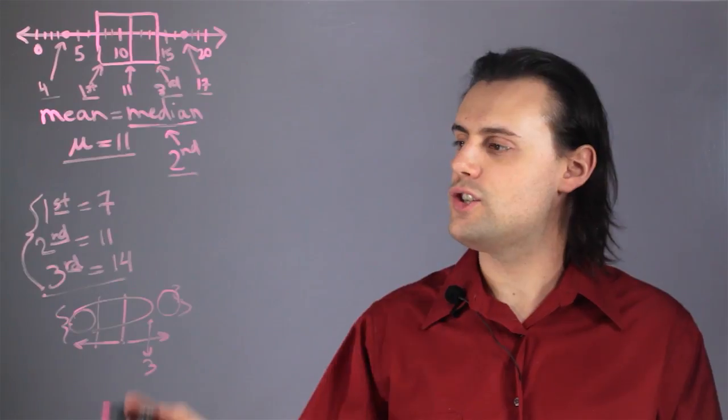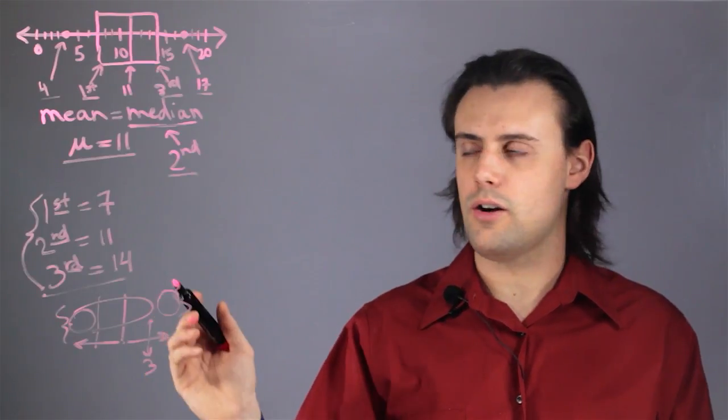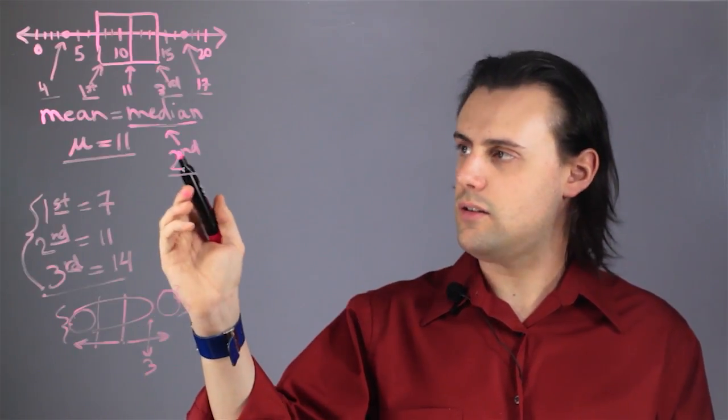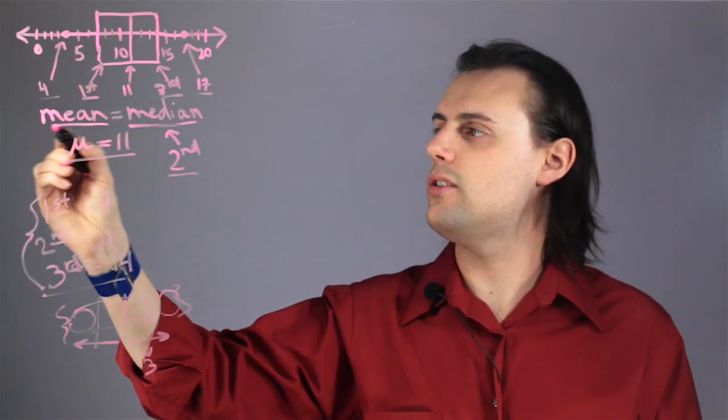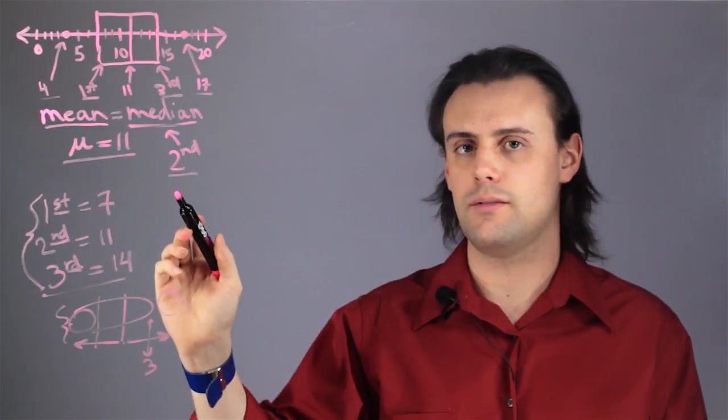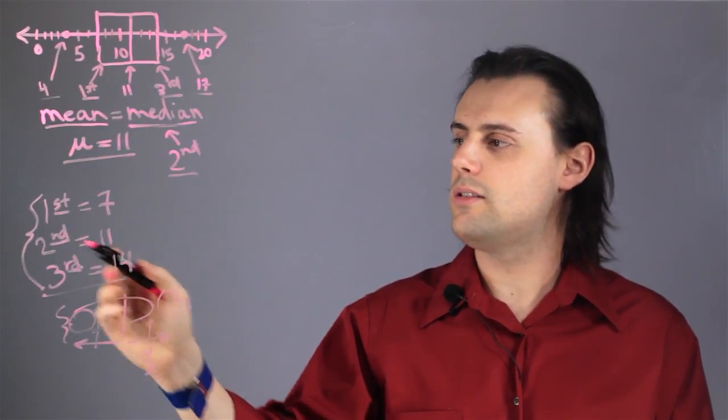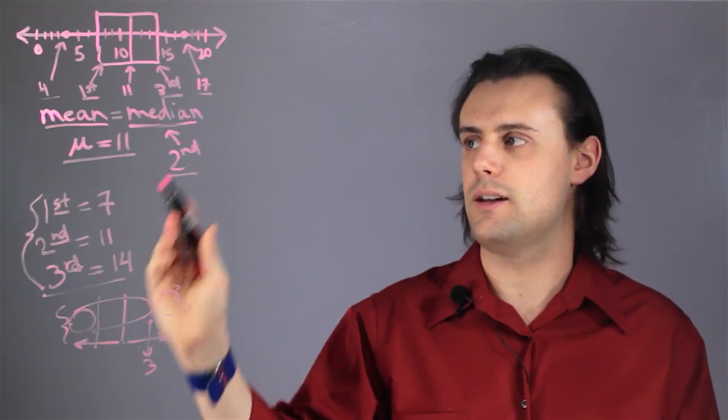So that's all the information I can gather unless I know that it is indeed a normal distribution in which case the mean would be equal to the median, 11. Otherwise I can only determine the quartiles and the median.